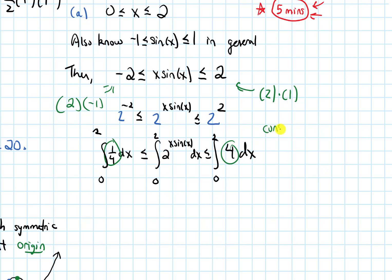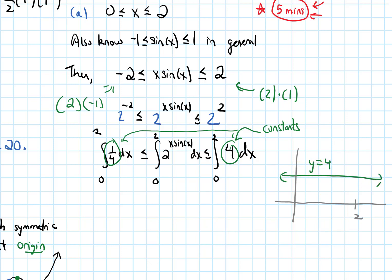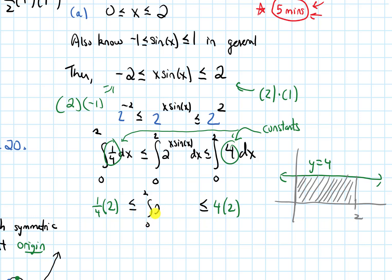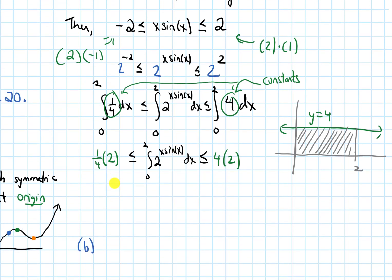I notice that 1/4 and 4 are both constants, and we know how to do a definite integral of a constant. If I look at the function y equals 4, it's a horizontal line, and the area from 0 to 2 is just a rectangle with height 4 and base 2. So the right integral is 4 times 2 equals 8. Similarly, the left integral is (1/4) times 2 equals 1/2, which is 0.5. So we get 0.5 ≤ the integral ≤ 8, which is precisely what we wanted to show.